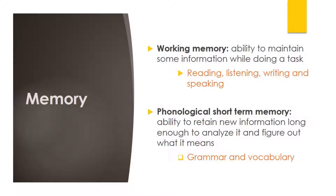The third ability is working memory, which refers to the learner's ability to maintain some information while doing a task. The capacity of the working memory differs from individual to individual. You may need to think of it as the RAM of a mobile phone — the bigger the capacity of the RAM, the faster the phone is. Working memory is crucial, for instance, in reading comprehension activities. Learners need to read and keep information in store in order to answer the questions when they finish reading. Learners with big working memory will retain and remember more information than those with little working memory capacity.